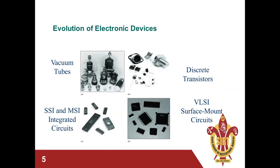These show the evolution of electronic devices. We see vacuum tubes, which were used for amplification and switching but were very bulky in size and required large area. Then came discrete transistors — BJT, NMOS, PMOS, and others. At the bottom we see SSI and MSI integrated circuits that came after the invention of CMOS. In the current era, we deal with VLSI — Very Large Scale Integration — surface mount circuits.